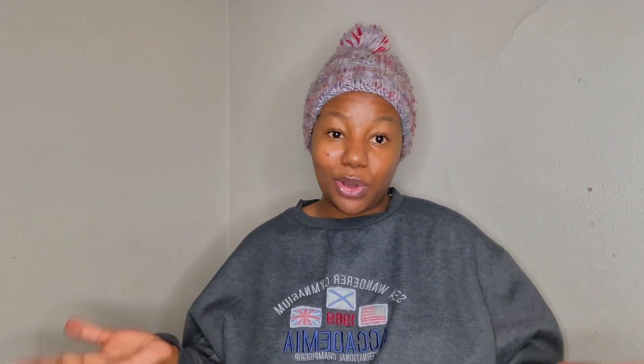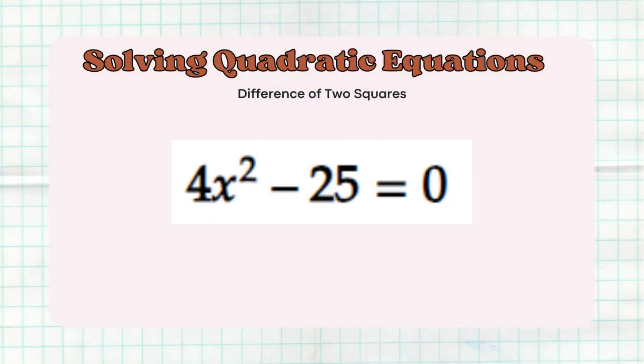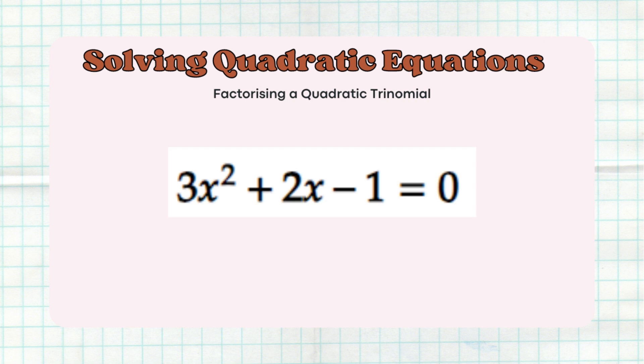The factorizing you need to know is the following: the first one is finding a common factor, the second one is a difference of two squares, and the third one is factorizing a quadratic trinomial.